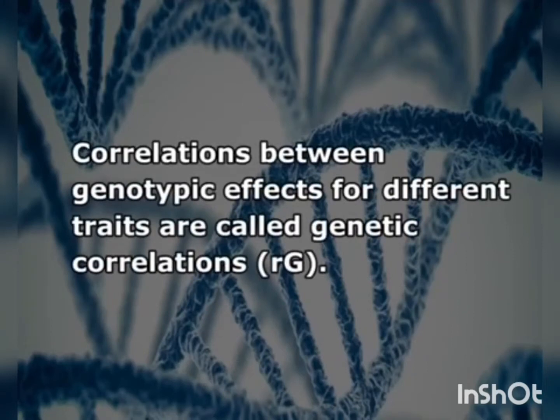An example of genetic correlation due to a common set of genes might be the association between grain zinc and iron content. Varieties that accumulate high concentrations of one element usually also accumulate the other, probably because of a common uptake mechanism. An example of a structural association between traits is the relationship between biomass yield and grain yield. These traits are highly correlated simply because grain yield is a large component of biomass yield.